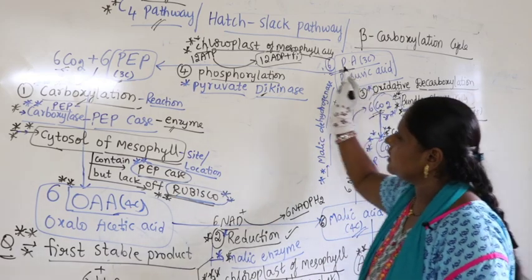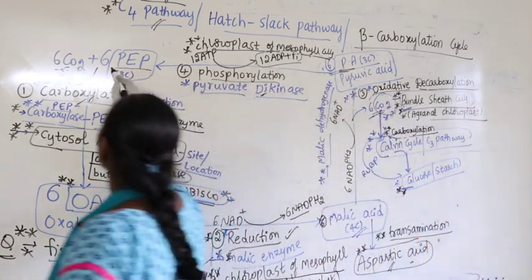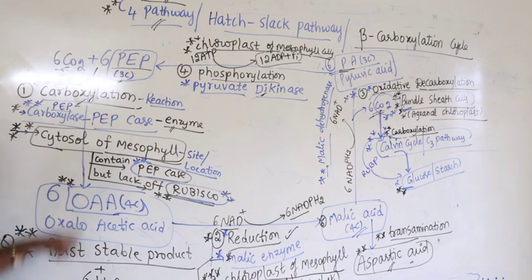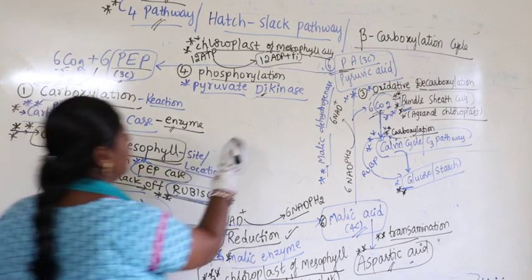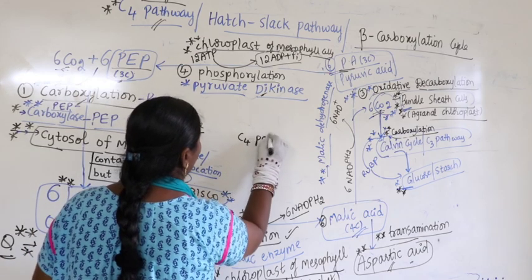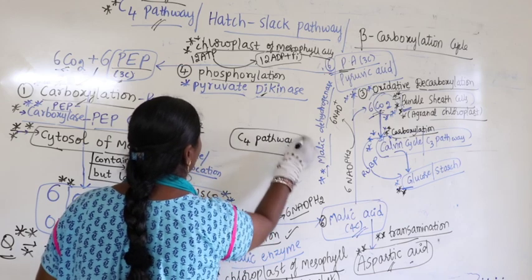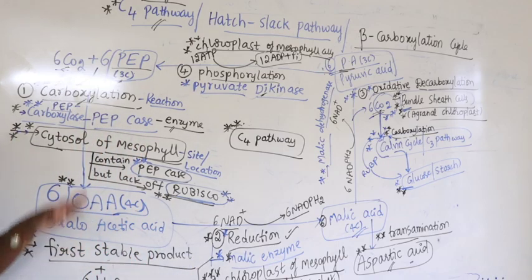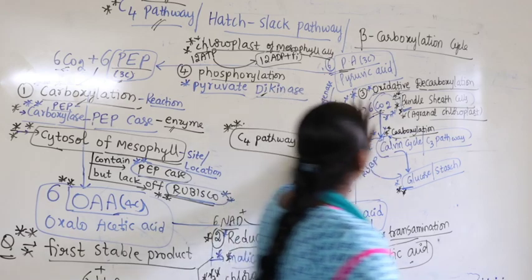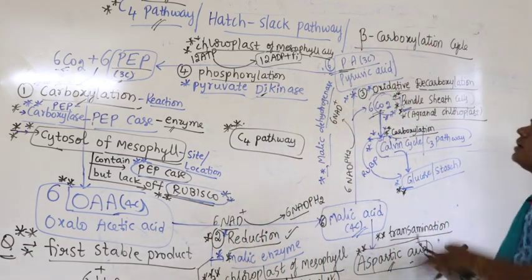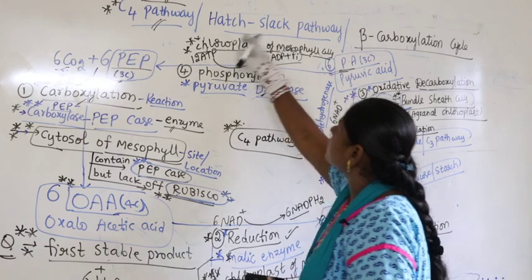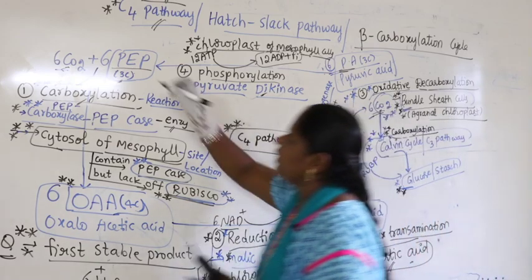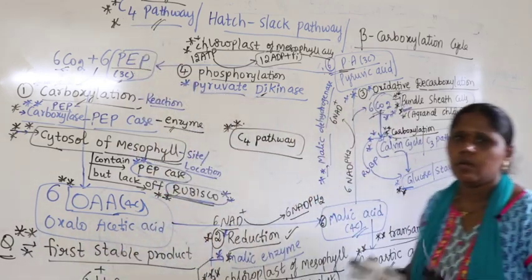Again 6 pyruvic acid gets converted into 6 phosphoenol pyruvate, and the cycle begins again. This is called the C4 pathway or C4 cycle. Carboxylation happens twice, which is why it is called the beta-carboxylation cycle, also known as the Hatch and Slack pathway.